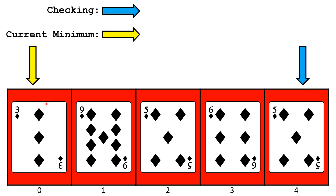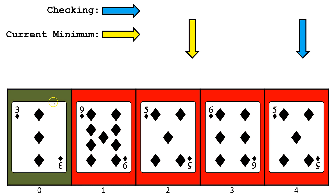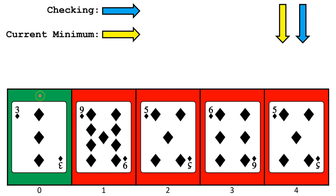Even though it is in the correct place, the algorithm will end up switching the value with itself, so 3 will still end up in index 0. Now we've sorted index 0, so we're going to turn this green.